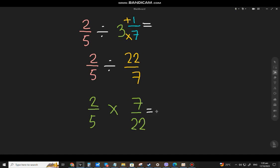And as much as possible, if you could reduce it, like this one. 22 and 2, you can divide both of them by 2. That will be 1 and 11 here. So 1 times 7, that will be 7.